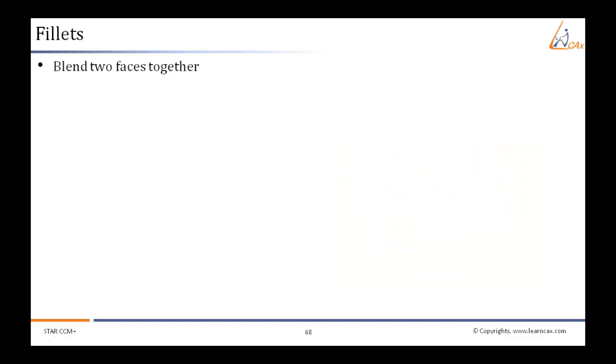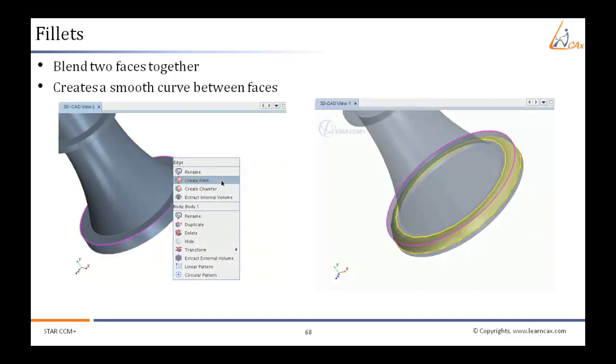What if we have two faces and want to merge them to form a single face? Then we can use the fillets tool which blends two faces together. This tool creates a smooth curve between faces.